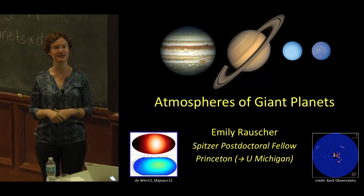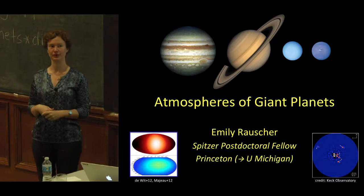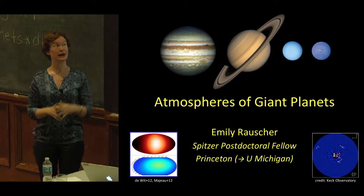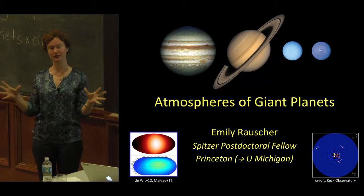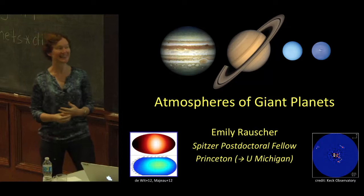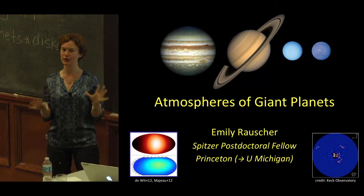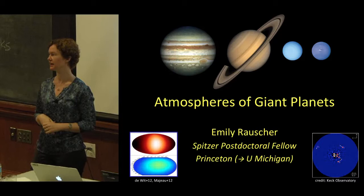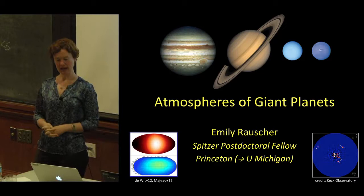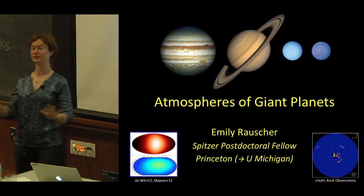In our own solar system we have the best-known examples, though some in astronomy might be surprised that there are still some basic things we're figuring out about those planets. I'm not going to talk about the solar system at all. What I do mostly is study transiting planets, hot Jupiter atmospheres, and 3D modeling — but I'm going to talk almost not at all about that, because the point of this workshop is directly imaged planets. An atmosphere is an atmosphere, so there's quite a lot of overlap.